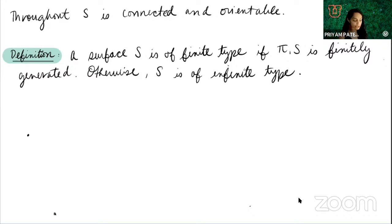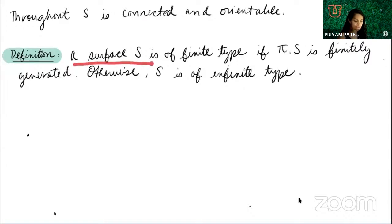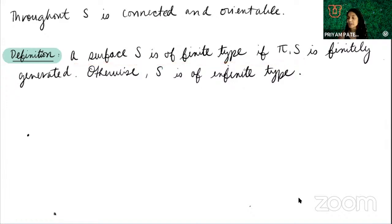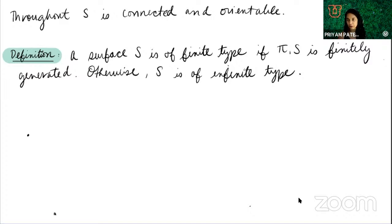Throughout the entire talk, S is going to be connected and orientable. A lot of the time it's also going to be boundaryless, but I'm not going to make that restriction in the beginning. A surface is of finite type — these are the ones that people have typically thought about the most — if the fundamental group is finitely generated. An equivalent definition is that the surface is homeomorphic to a compact surface with finitely many points removed. Otherwise, the surface is of infinite type, and since you saw the title, that's what this talk is mostly going to be about.